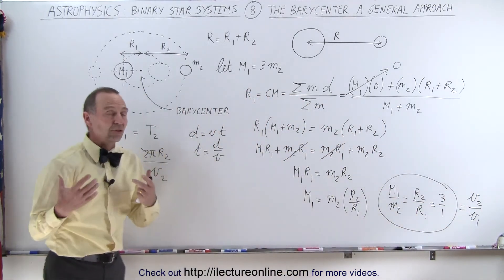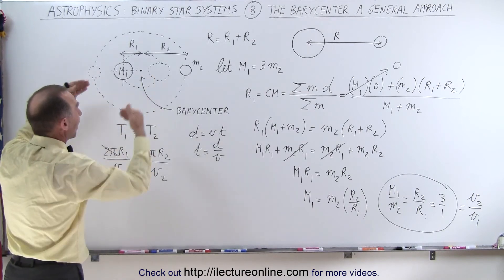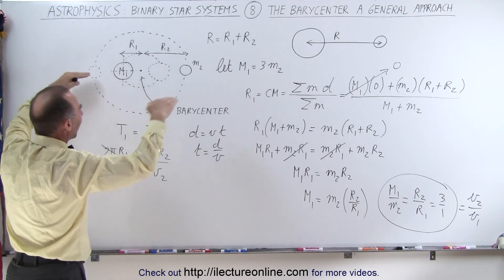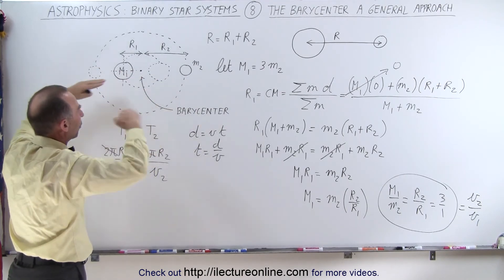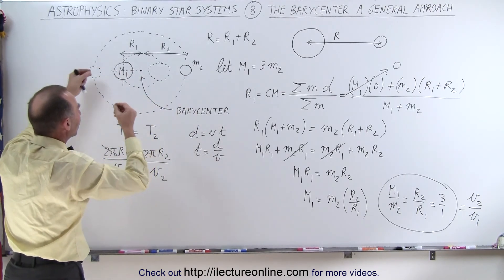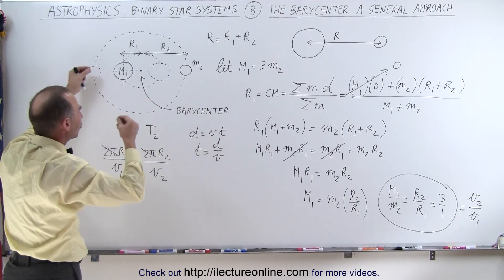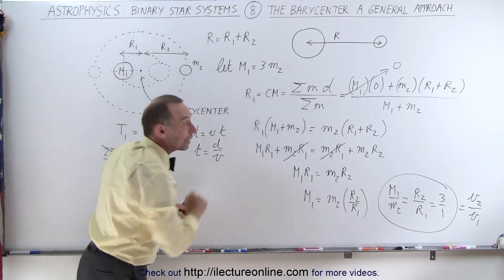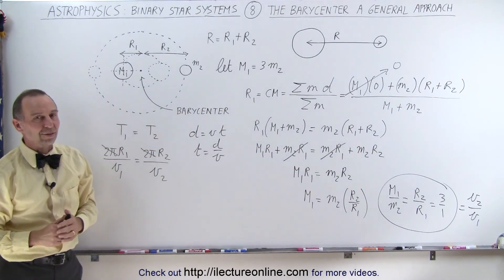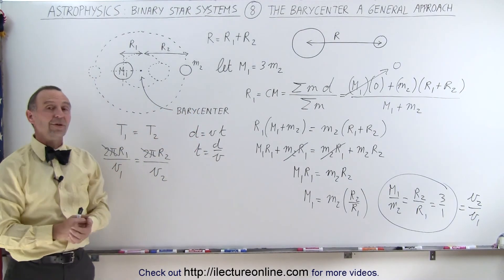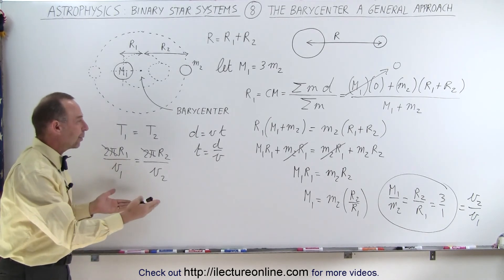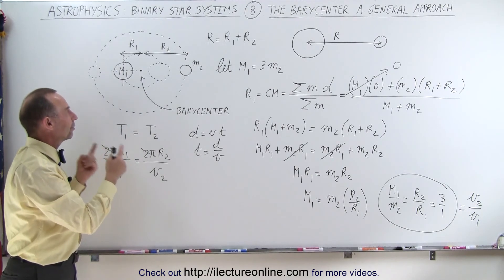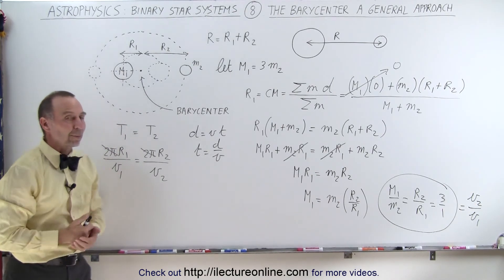If we can spectroscopically discover their velocities — when the orientation of the orbits gives us a good line of sight so we can see the two objects revolving around the barycenter — we can see the redshift and blueshift in their spectrum, calculate their velocities, and from that calculate the ratios of their masses. That's why it's so important to understand the barycenter and how it affects the velocities and distances relative to their masses as they revolve around it.